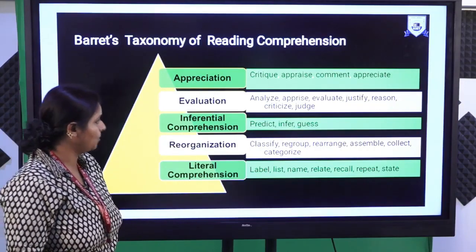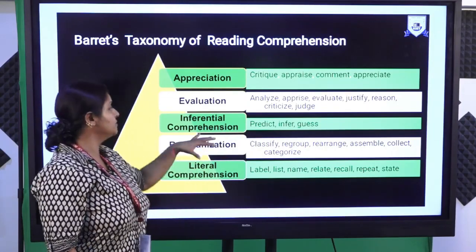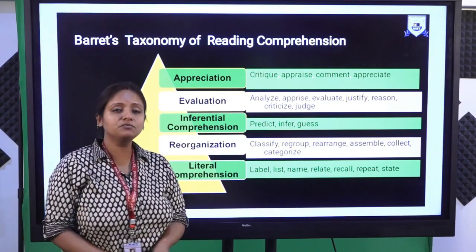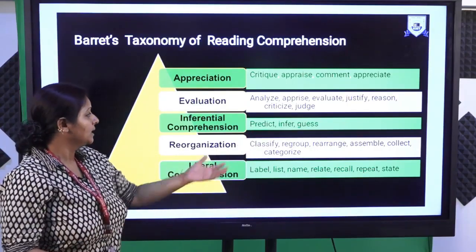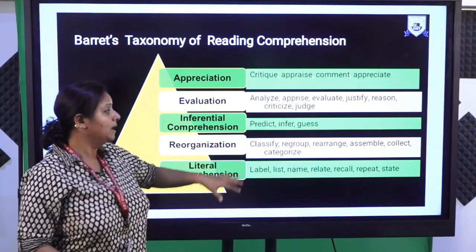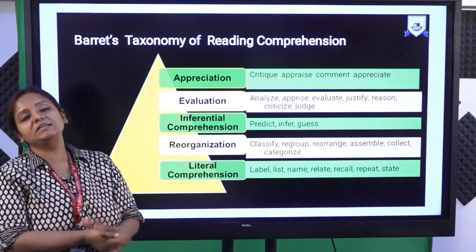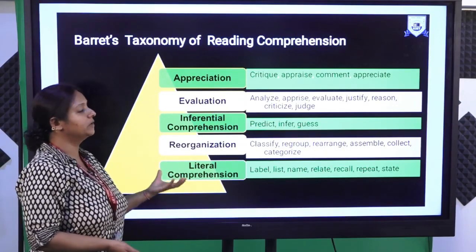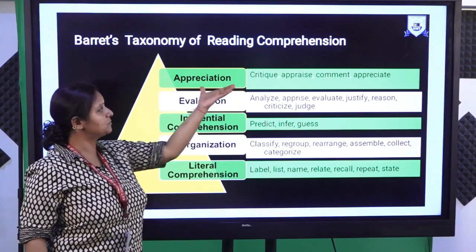The third type is inferential comprehension — when the purpose is to predict, infer, or guess meaning out of a given passage. Then reorganization involves regrouping, classifying, rearranging, assembling, and categorizing. Next is literal comprehension, which involves labeling, listing, naming, renaming, repeating, or restating something. Barrett has said these can be the different purposes or objectives of a given passage, and accordingly he has given different aspects for each category.